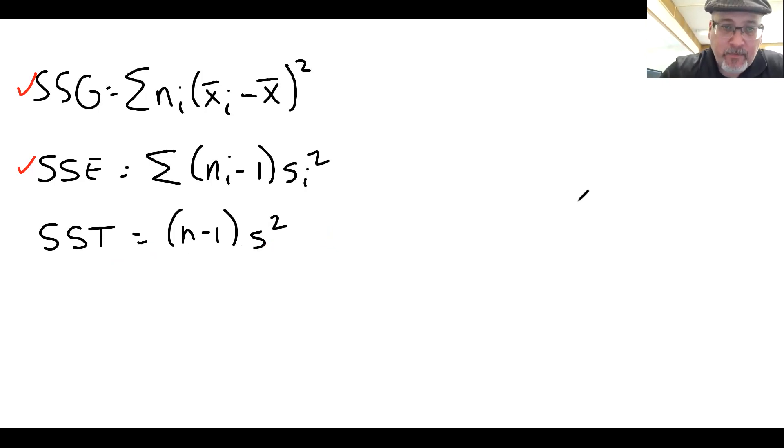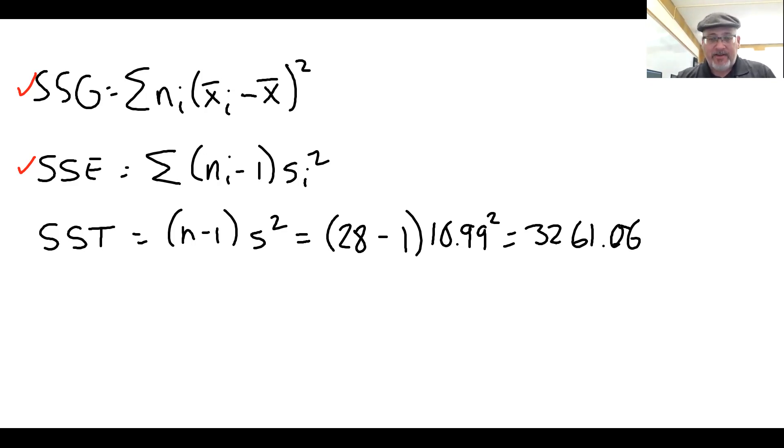We'll start with SS total. Our grand sample size was 28. So we'll do 28 minus one. Our grand standard deviation was 10.99, and that gets squared. Get out the calculator of your choice and put all that in there. I'm going to round it to two decimal places: 3,261.06. Let me press the buttons again and make sure I didn't make a mistake. I got the same answer. So let's go ahead and put that in our ANOVA table: 3,261.06.